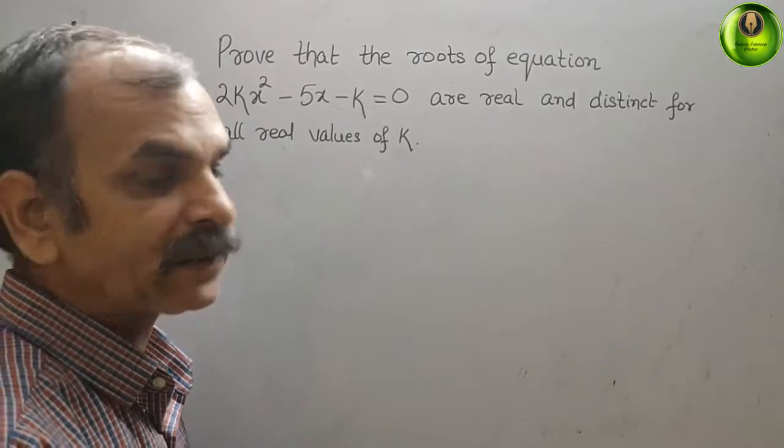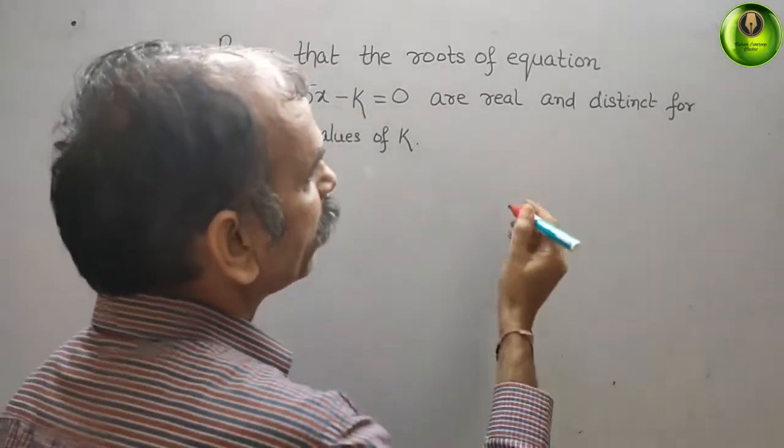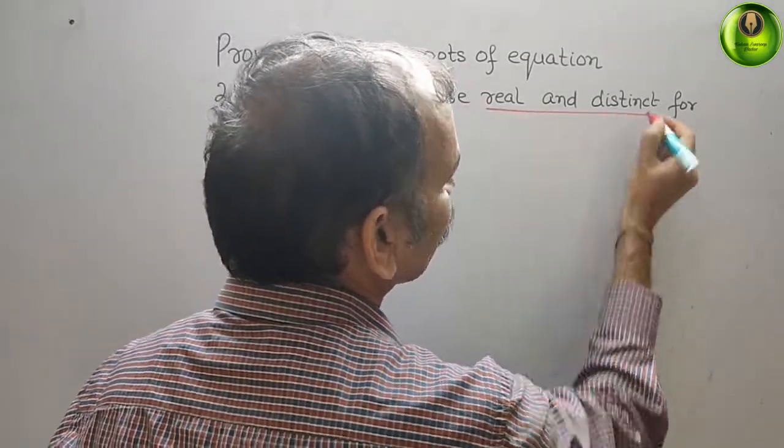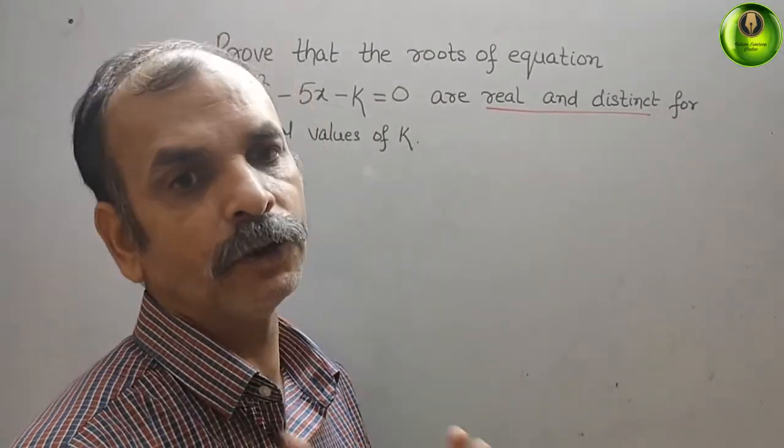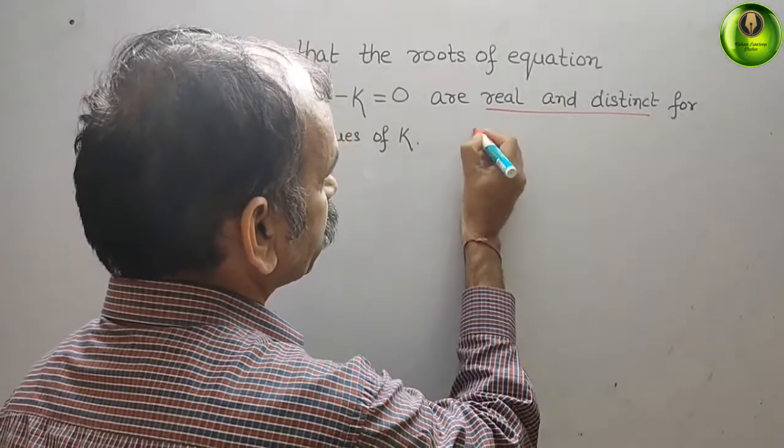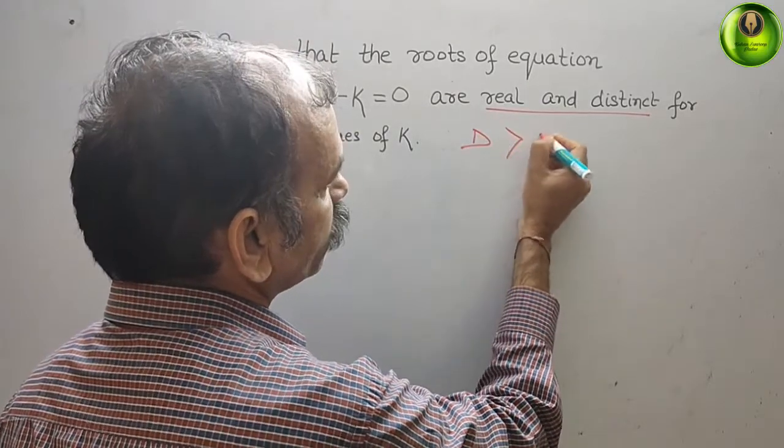Now, first we will understand what they have told, real and distinct. That means your discriminant should be greater than 0. Discriminant should be greater than 0.